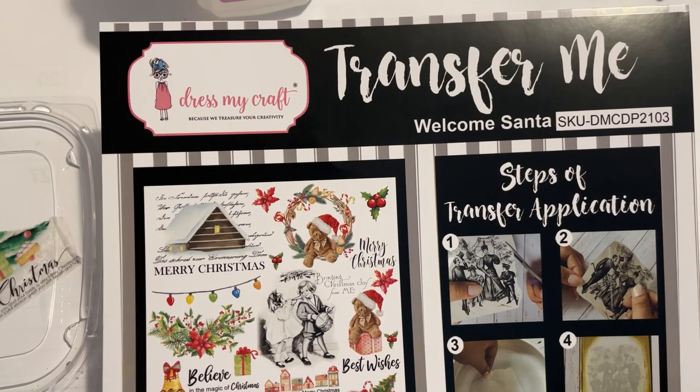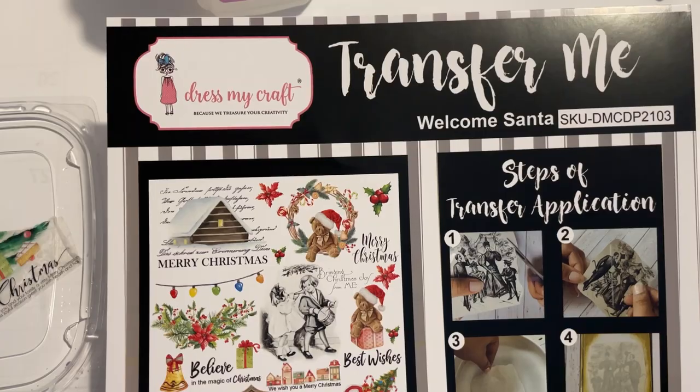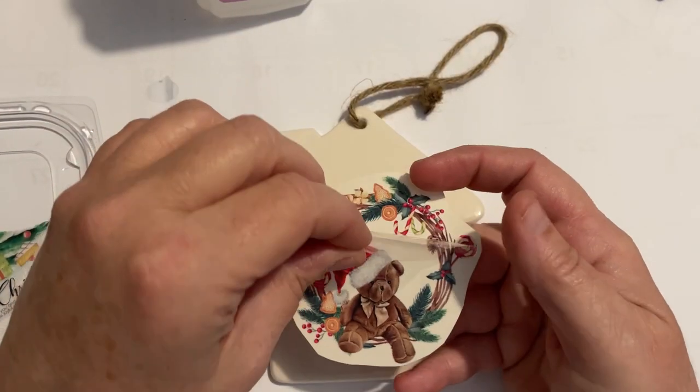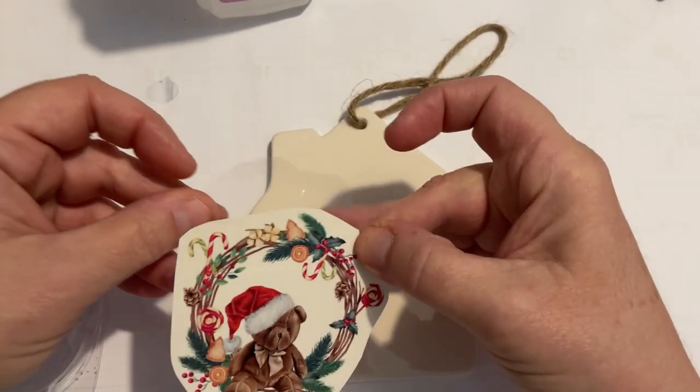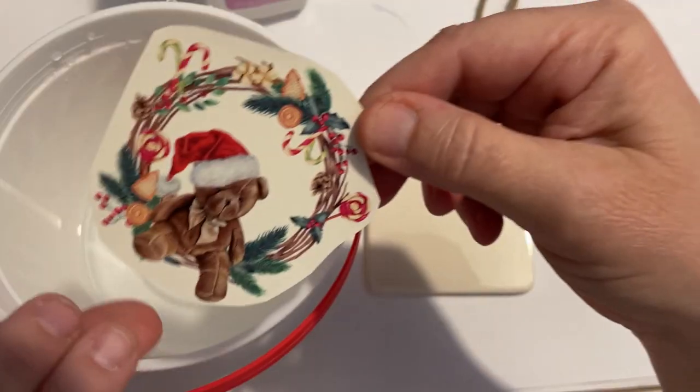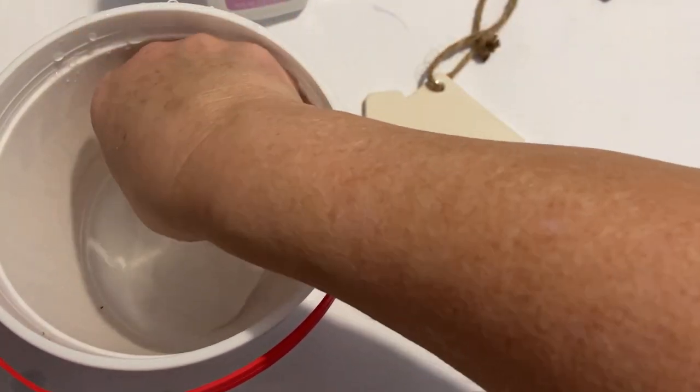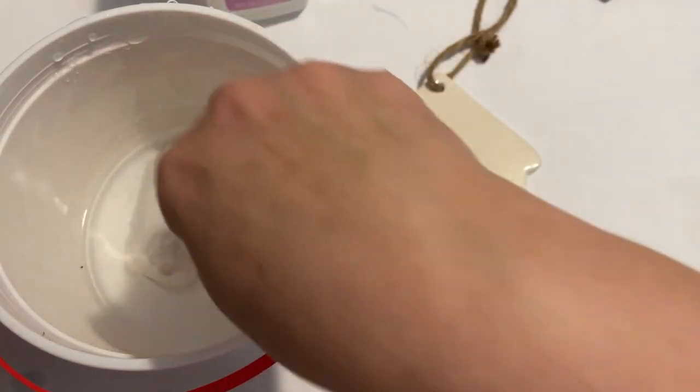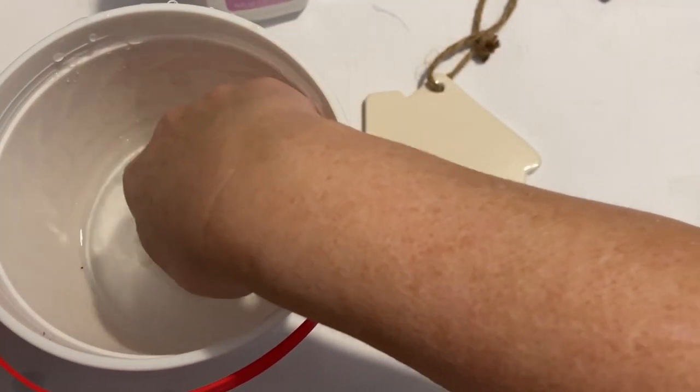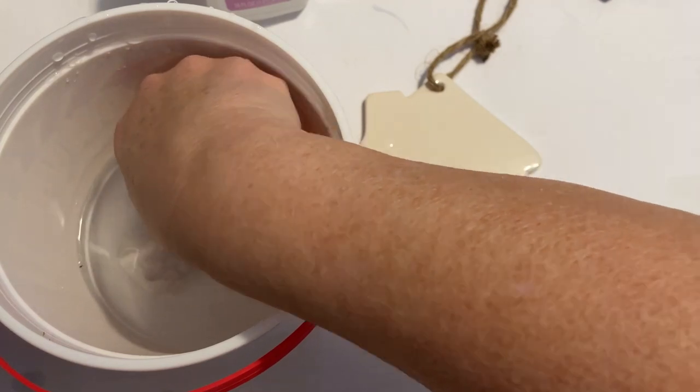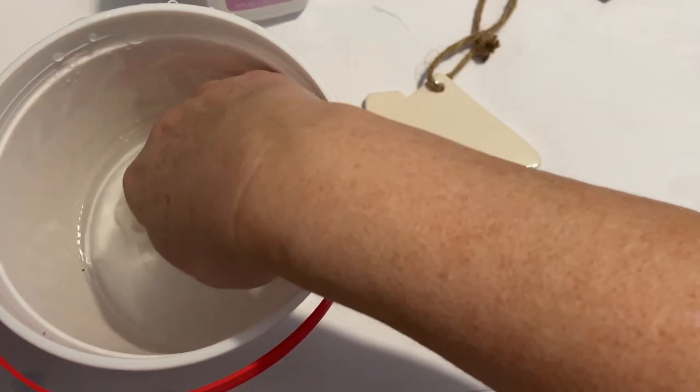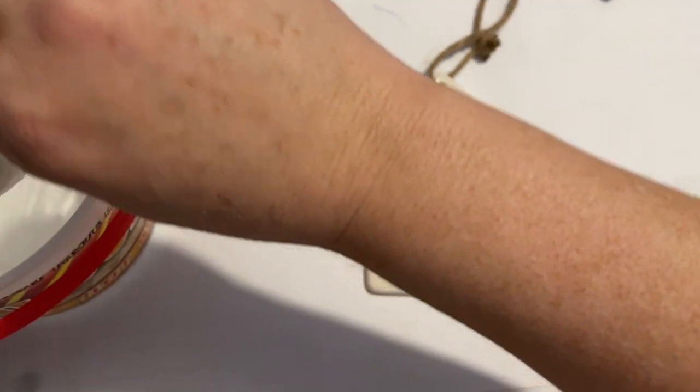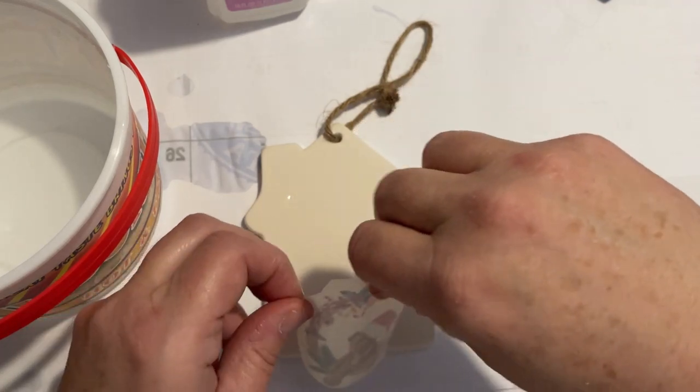Here we are using a water transfer on a Dollar Tree Blank. They do have those now, which is kind of fun. And I'm going to put this little teddy bear in a wreath and just showing you the process. You take the plastic off. You dip it in water for about 10 to 12 seconds.